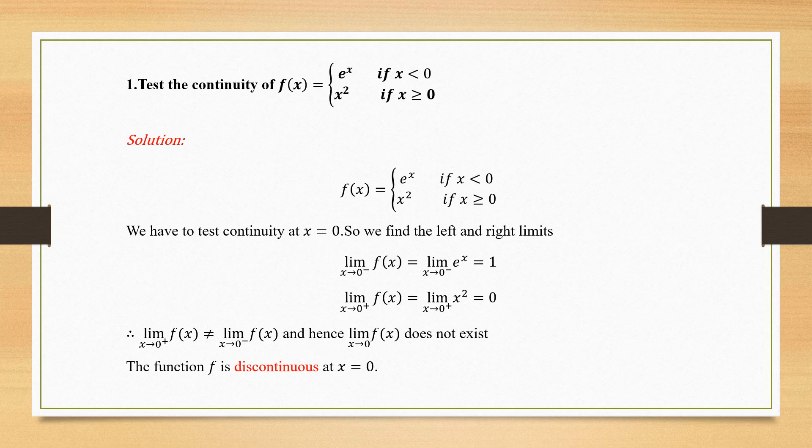To find the left limit: limit x tends to 0-minus of f(x). The 0-minus means we are approaching 0 from the left side, so we use the function e^x. Substituting x = 0 gives e^0, which equals 1. So the left-hand limit is 1.